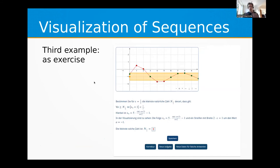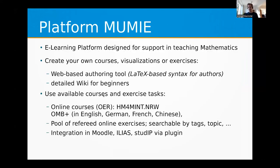The third example combines visualization with a question. Here the question is a bit different: there's a fixed strip with a fixed width — epsilon equals one half — and students must try to find the smallest N from which all points are inside the strip. Again, you can zoom in and out and then input your answer. This was also written in our authoring tool, which is part of our platform MUMIA.